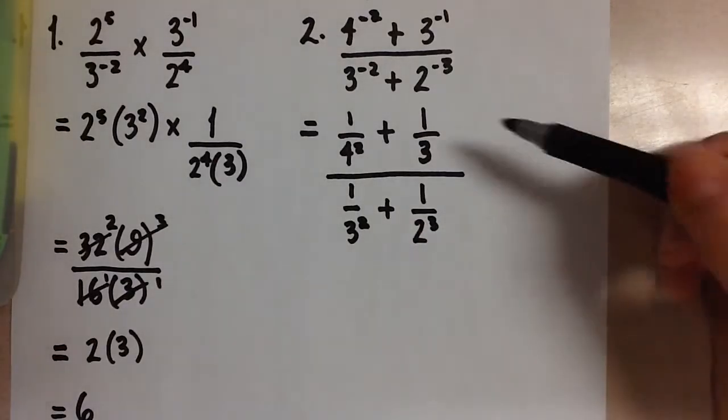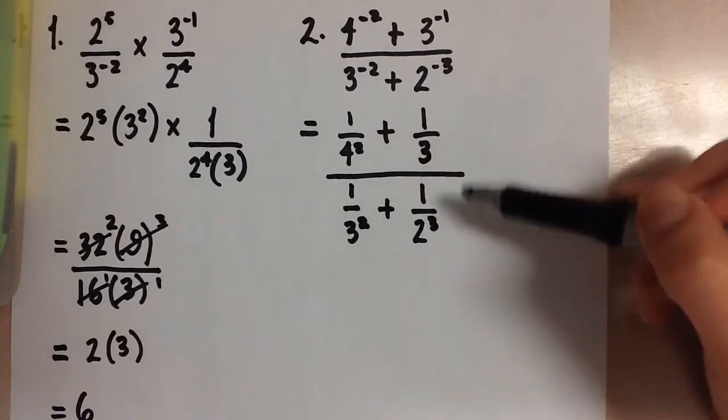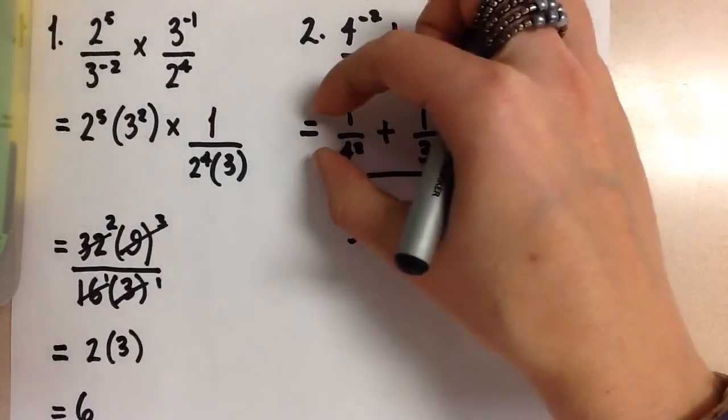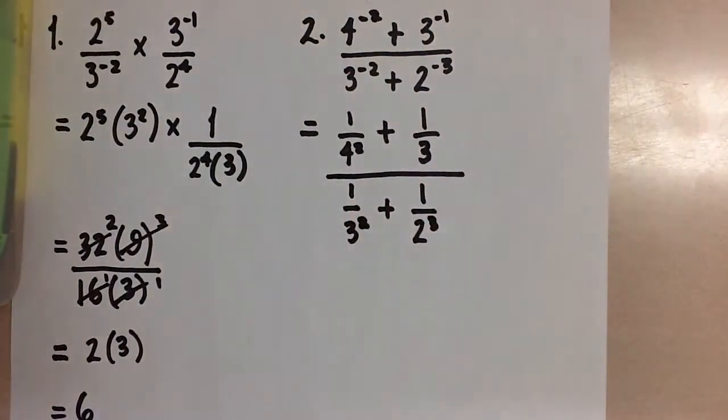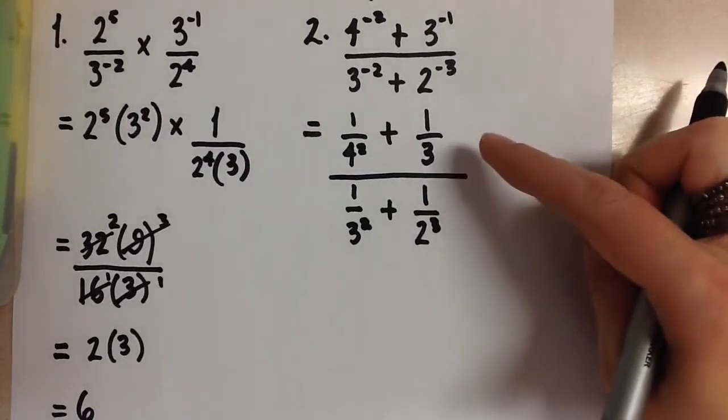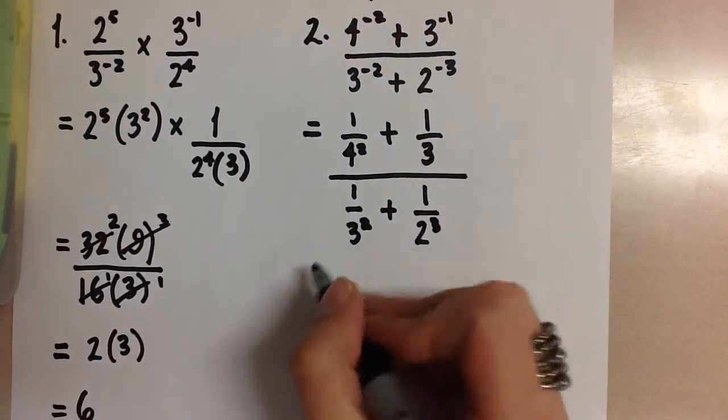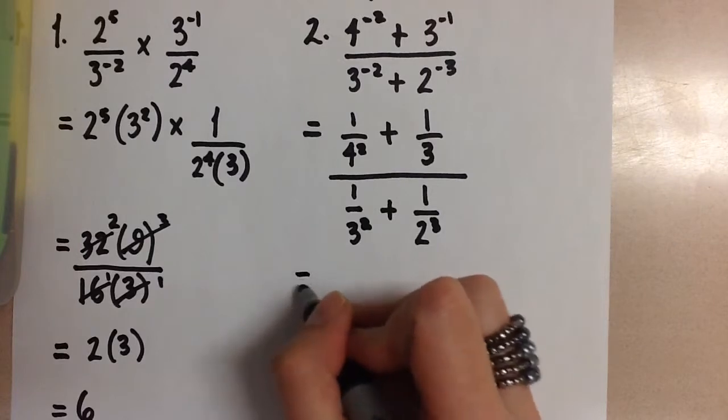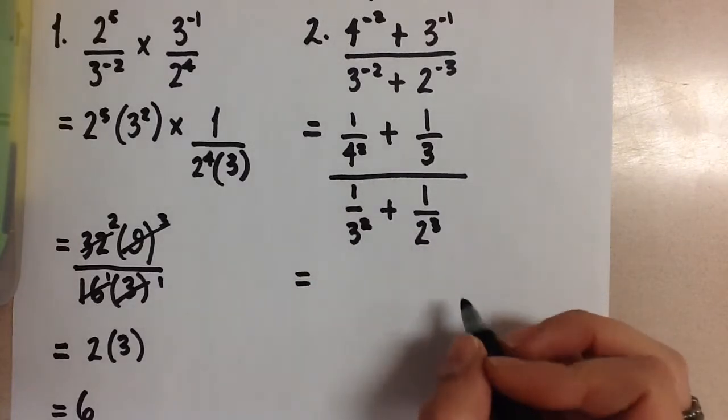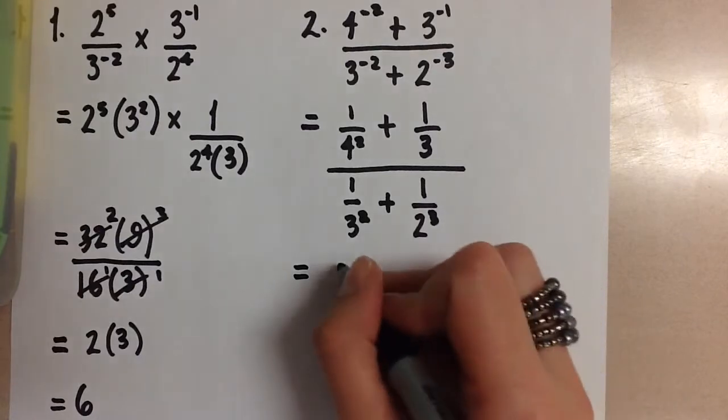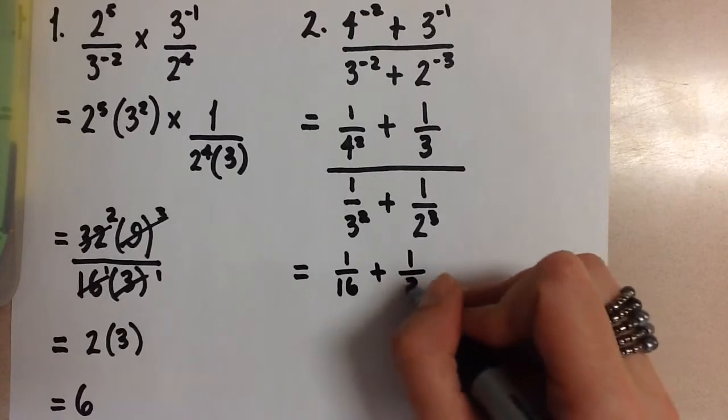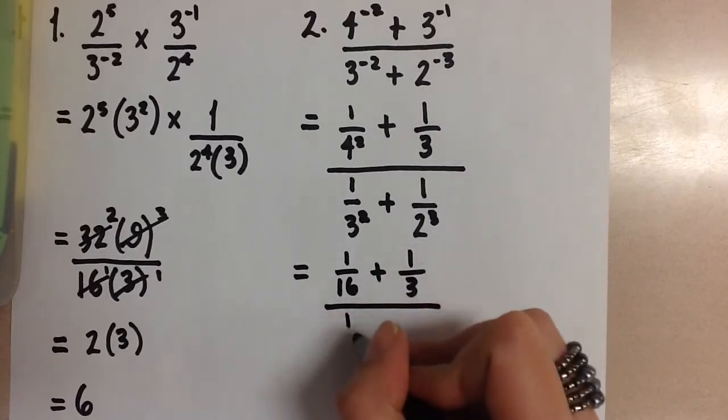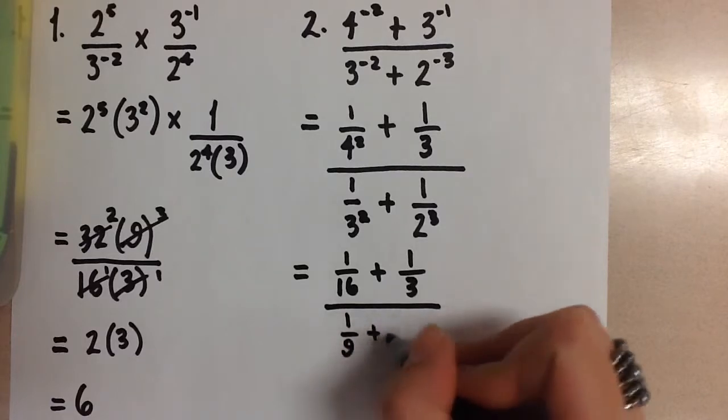So now we have sort of fractions within a giant fraction. So let's concentrate on adding the top portion together and adding the second portion together before we divide the 2 out in the end. In order to do this then let's evaluate each of the exponents and then we're going to have to do some common denominators. So we get 1 over 16 plus 1 over 3 and this is all over 1 over 9 plus 1 over 8.